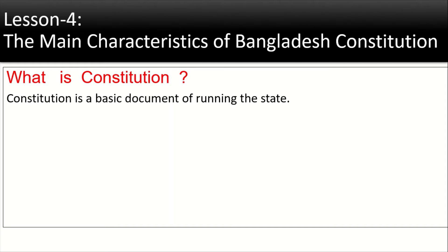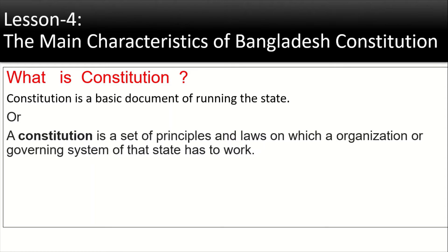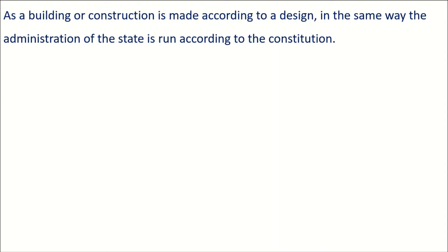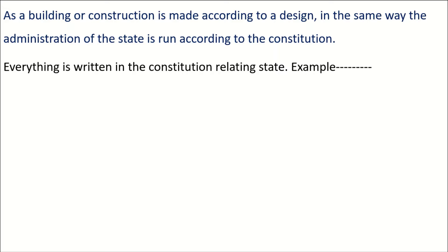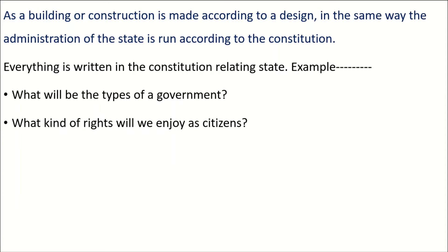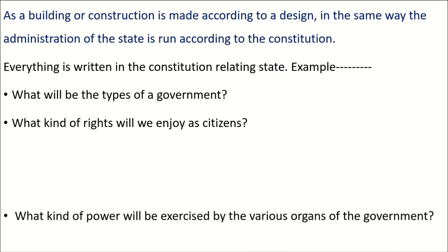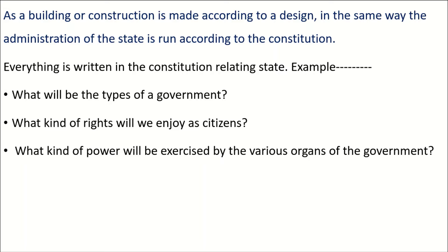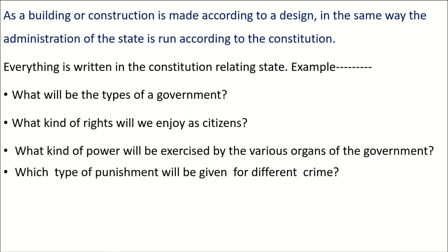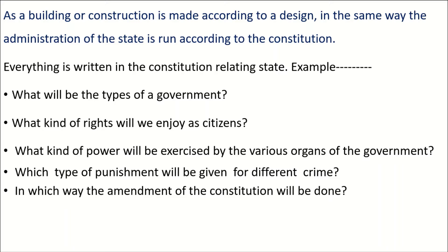A constitution is a basic document for running the state — a set of principles and laws on which the governing system of a state has to work. Just as a building is made according to a design, the administration of the state is run according to the constitution. Everything relating to a state is written in it: the type of government, rights of citizens, powers of government organs, types of punishment for crimes, and how the constitution will be amended.